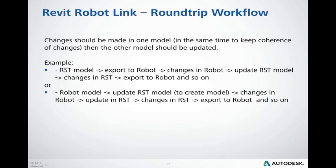Here is a description of the recommended round-trip workflow. To keep coherence of the model, changes should be made in one program at a time. For example, if changes are required in the Revit model which has already been updated in Robot, it's necessary to update the Revit model prior to applying changes. The same applies in the opposite direction.